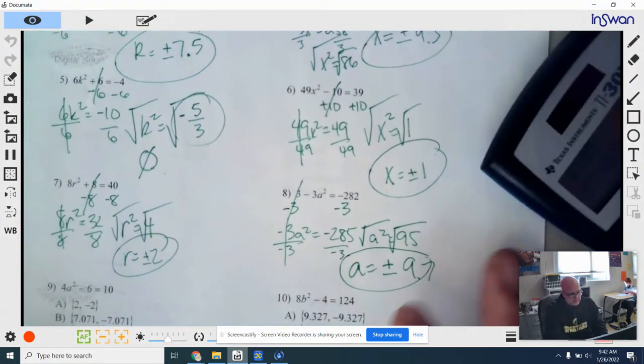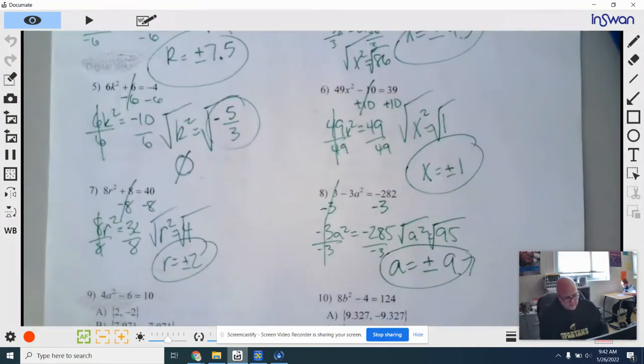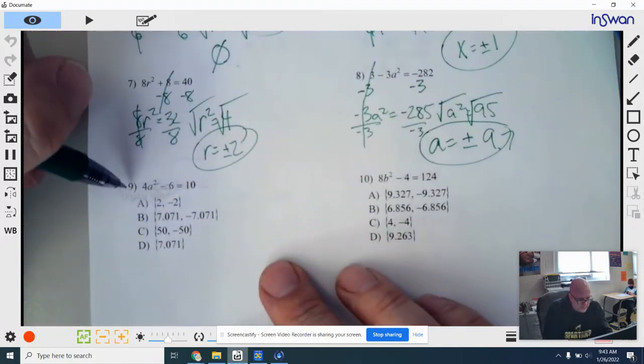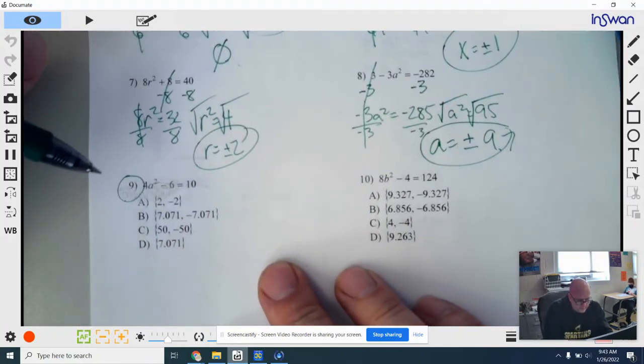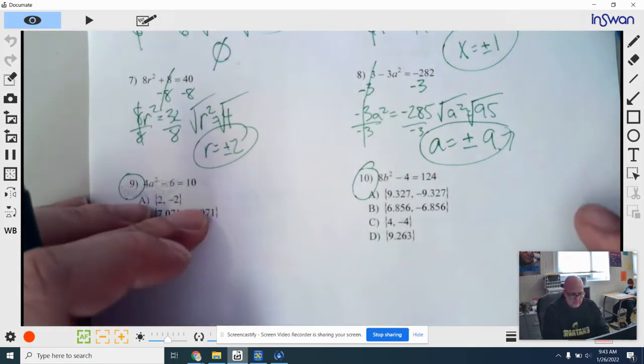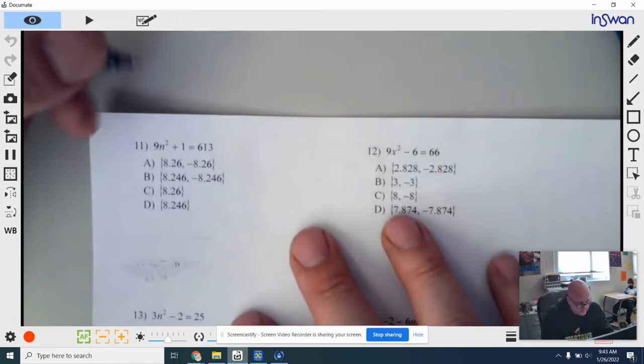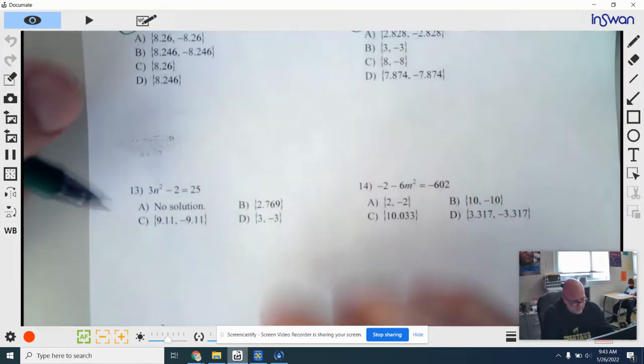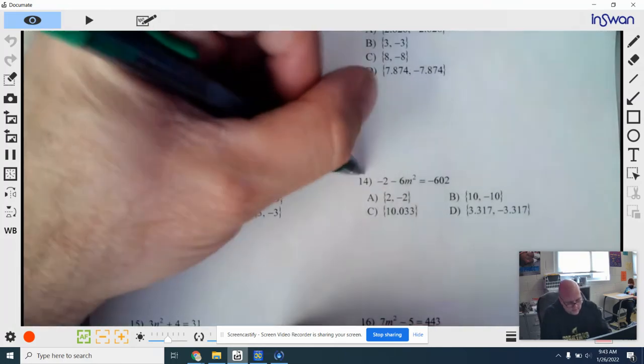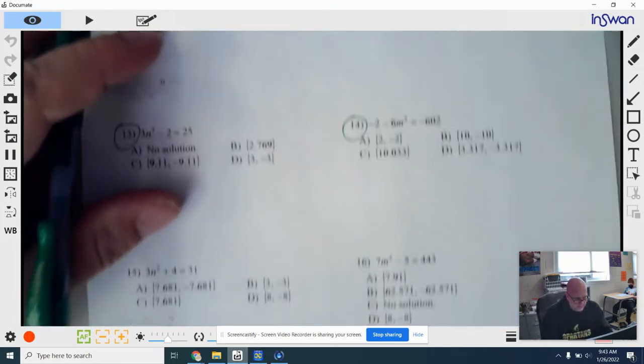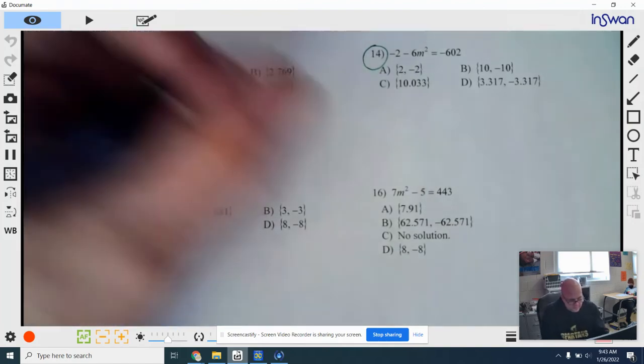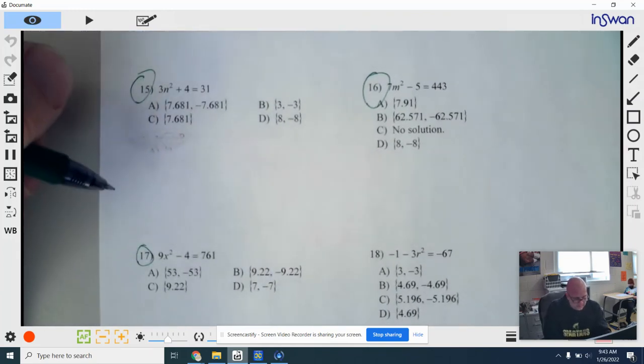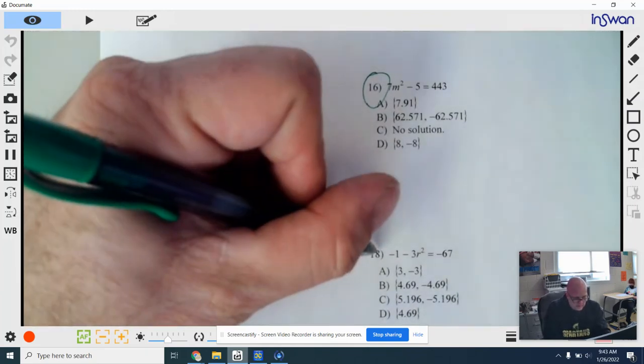So you guys are going to solve. Notice that if these are not perfect squares, they actually rounded them to the nearest thousandth. So same thing we did, they just go a little bit further. All right, solve number 9, number 10, number 11, 12, 13, 14, 15, 16, 17, and last, 18.